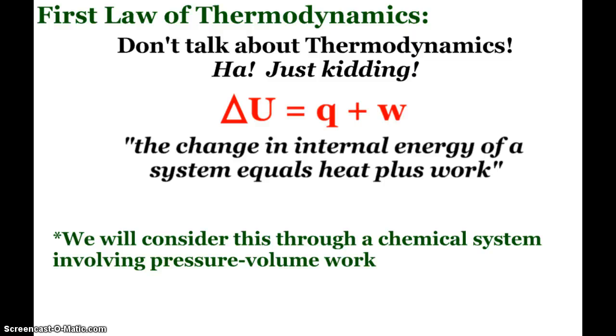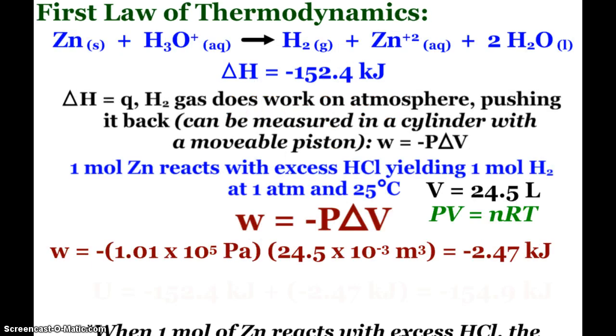And we're going to consider this through a chemical system that will indeed involve this pressure volume work. And here we see it. If I take zinc and react it with an acid, I'll make bubbles. Hydrogen gas, of course. And that hydrogen gas will work against the atmosphere. The delta H, the enthalpy change for this reaction, is negative 152.4 kilojoules, which was found experimentally, you remember, in a calorimeter.